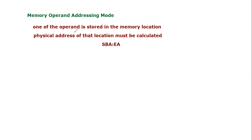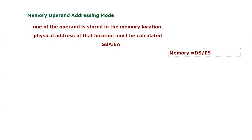In memory operand addressing mode, one of the operands in the instruction should be stored in a memory location. Operand is basically data — whenever we refer to data we use the word operand. When we are referring to memory, we are talking about either the data segment or the extra segment, because the extra segment is also used to store data. The extra segment is kind of a redundant segment to the data segment; when the data segment is full, one uses the extra segment.